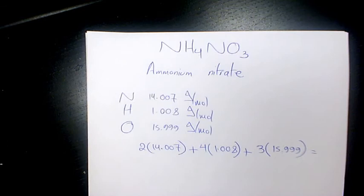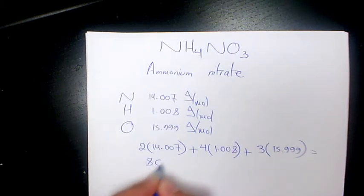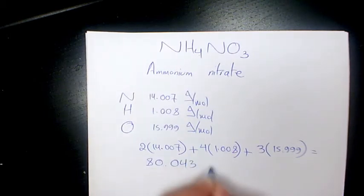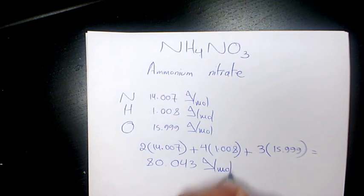So, that makes it as 2 times 14.007 plus 4 times 1.008 plus 3 times 15.999. That will give us 80.043 grams per mole.